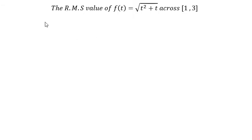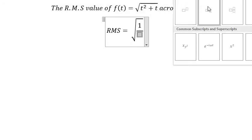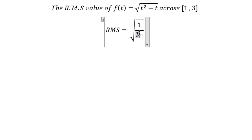So now I will show you the answer. The formula of root mean square - that should be about the square root of 1 over t number 2 minus t number 1.